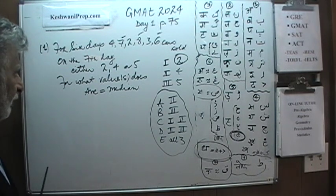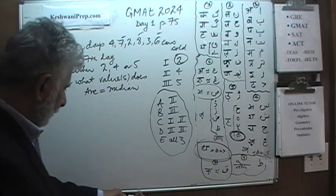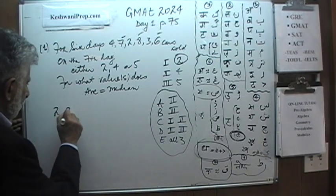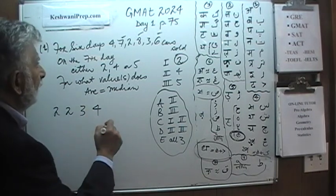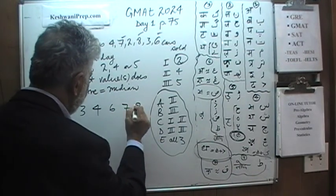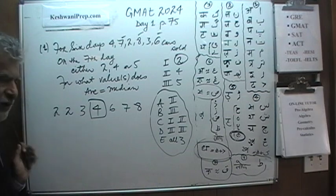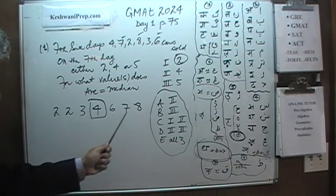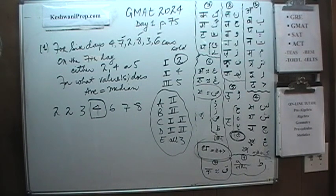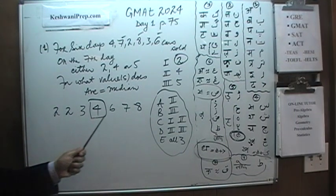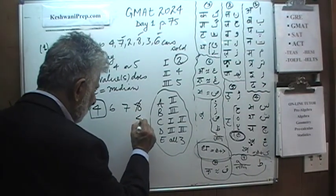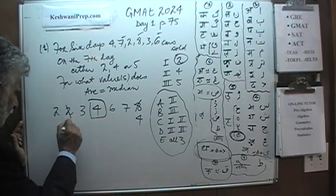If we look at the first value — two — we arrange all seven numbers. We have: 2, 2, 3, 4, 6, 7, and 8. Since there are seven values, the median is the middle one, which is 4. The question is: is the average of these seven numbers also 4? In order for the average to be 4, let's try to convert all the numbers into 4. I take 4 from the 8, give 2 to each of the 2s.